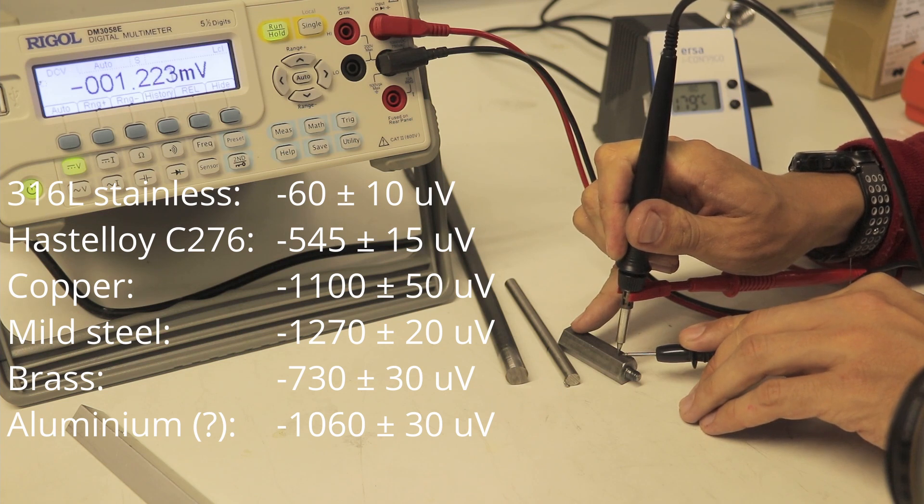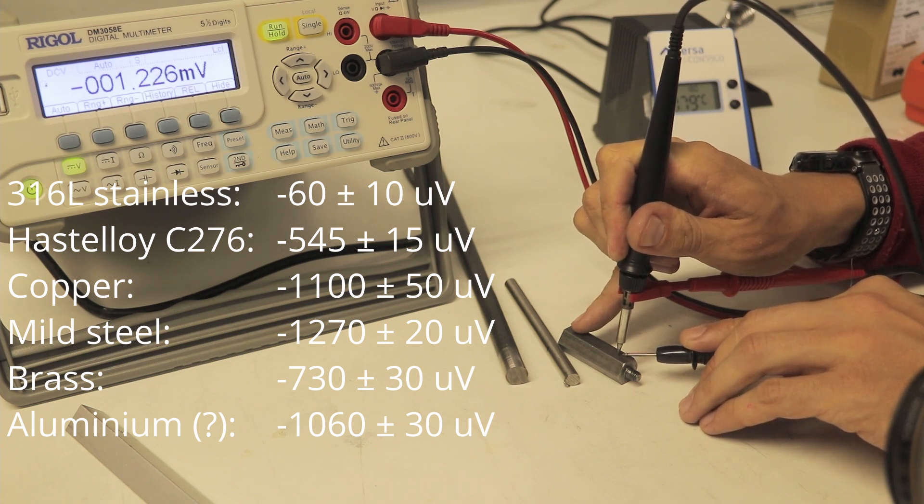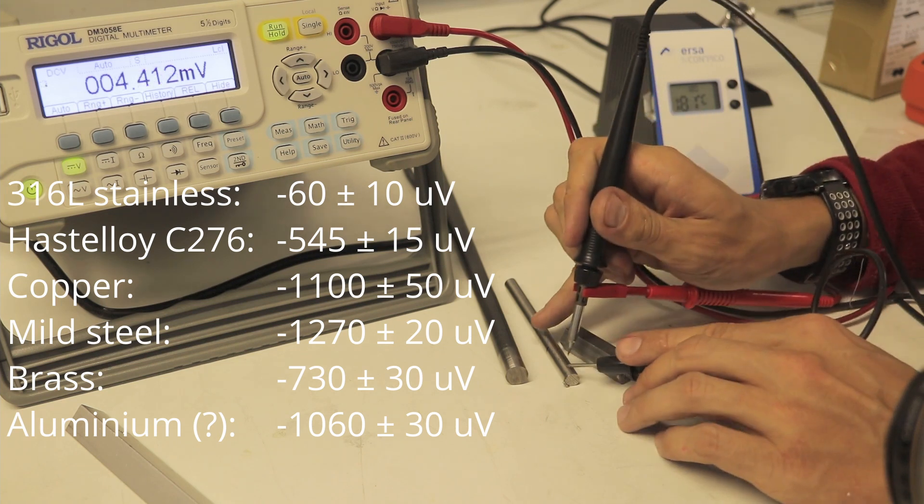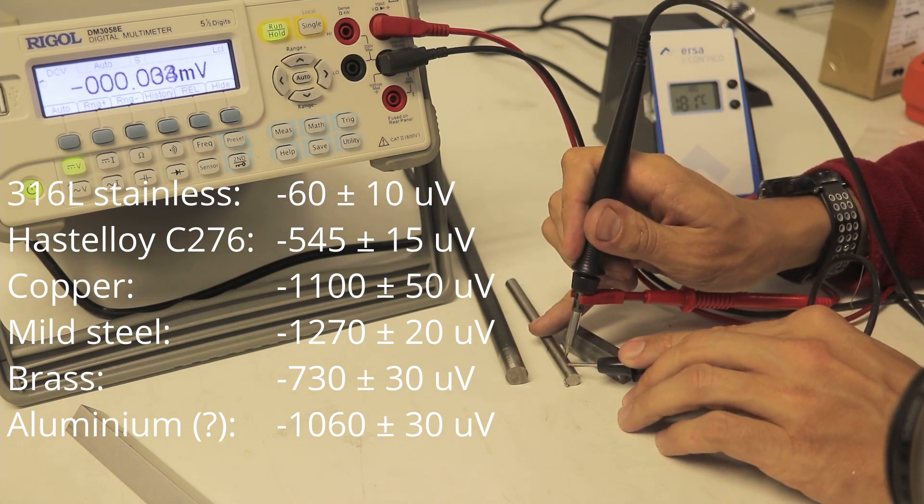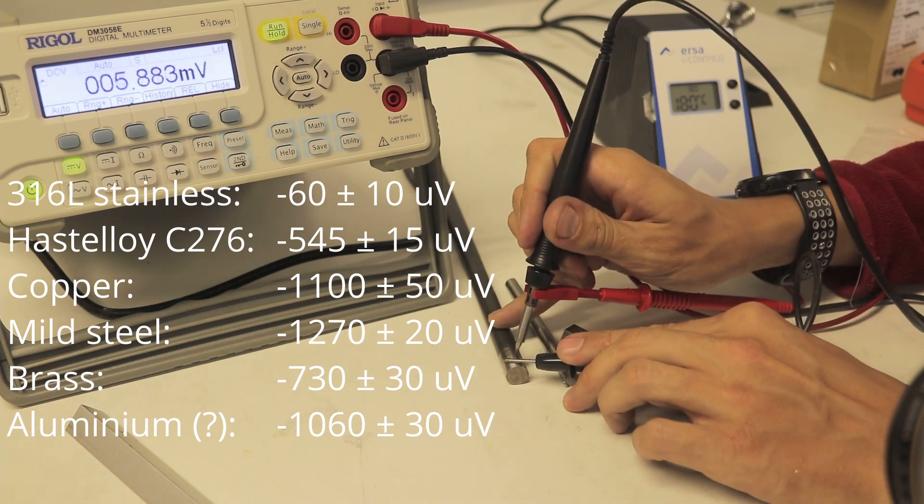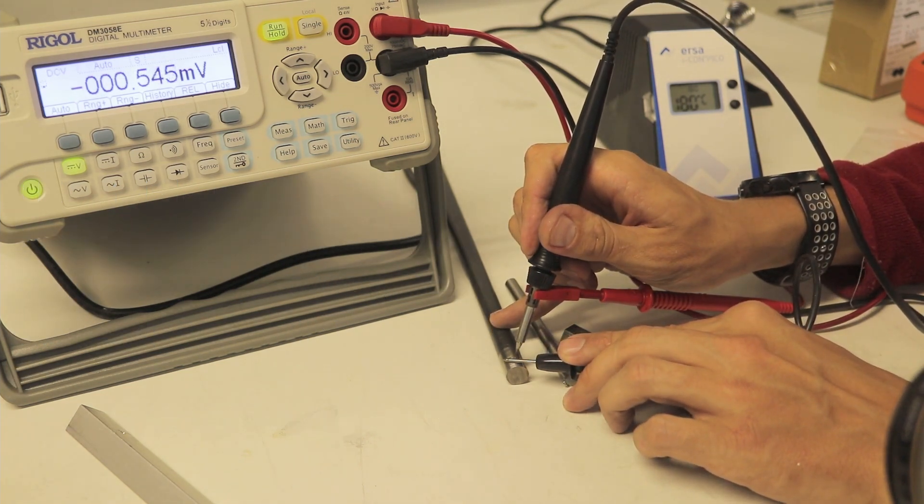So again, stainless, mild steel—1220 microvolts. 316 stainless—50 microvolts. And host alloy is about 550.